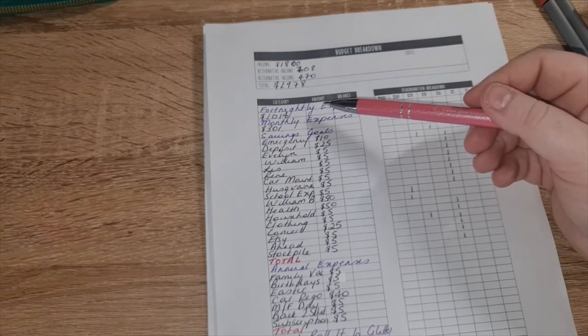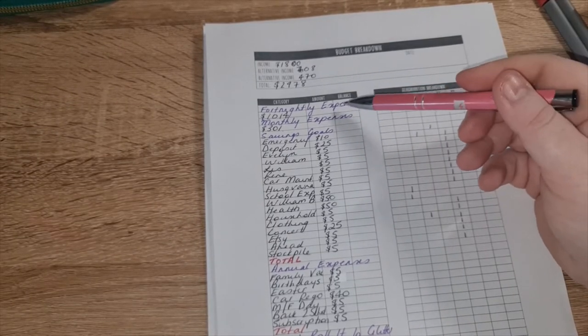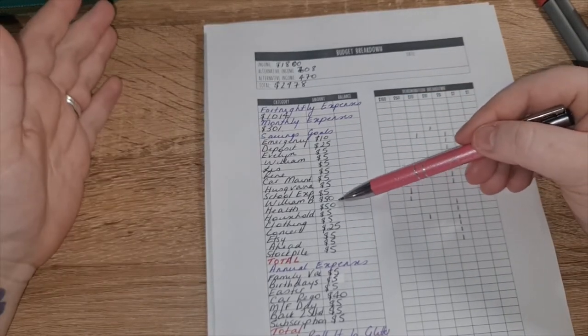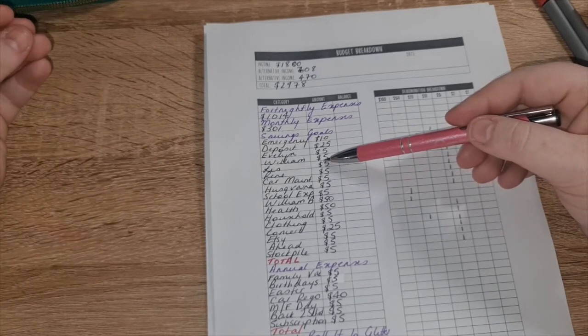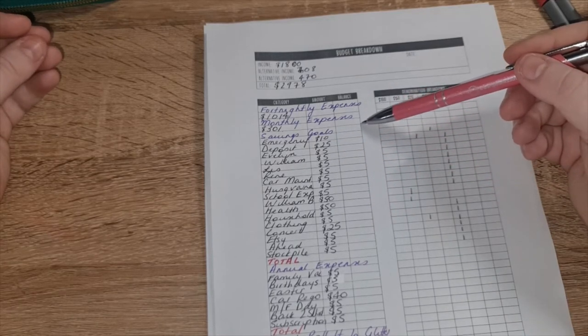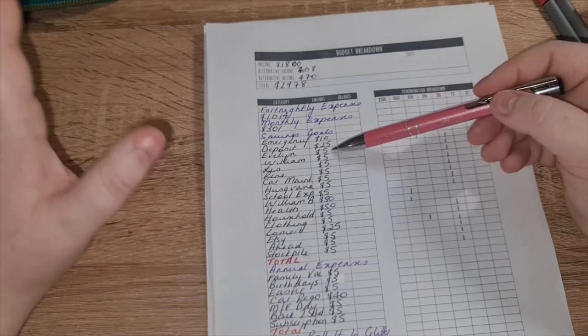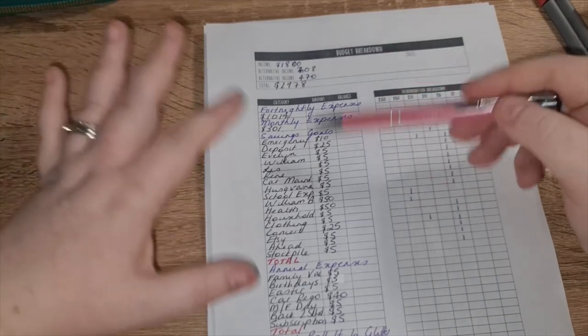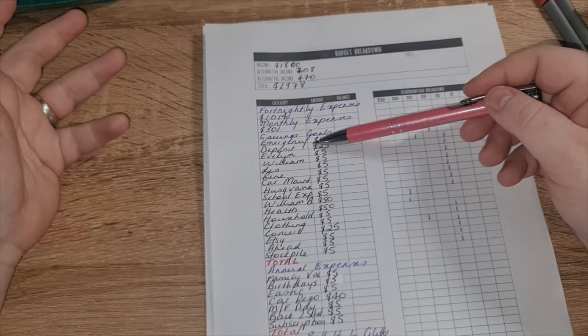So what I'm doing now is I know how much, because I get paid a salary, I know how much I'm getting paid every fortnight, so it's pretty easy for me. My income doesn't fluctuate, so I basically stuff the same amount in my envelopes every time.